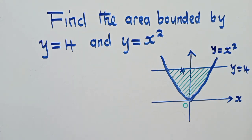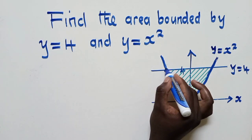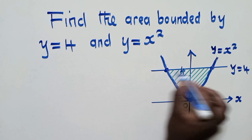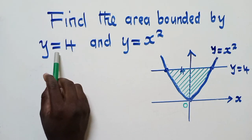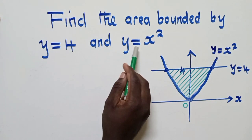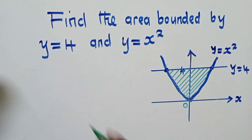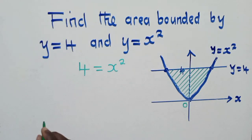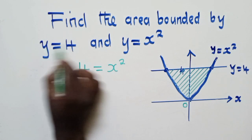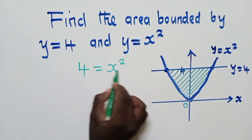After you've done so, you now calculate the points of intersection. So when I say the points of intersection, I mean right here and right here where these two lines or these two equations are meeting. So how do we calculate the points of intersection? You just equate these two equations because here we're saying y is equal to 4 and here we're saying y is equal to x power 2. Meaning we can say 4 is equal to x power 2.